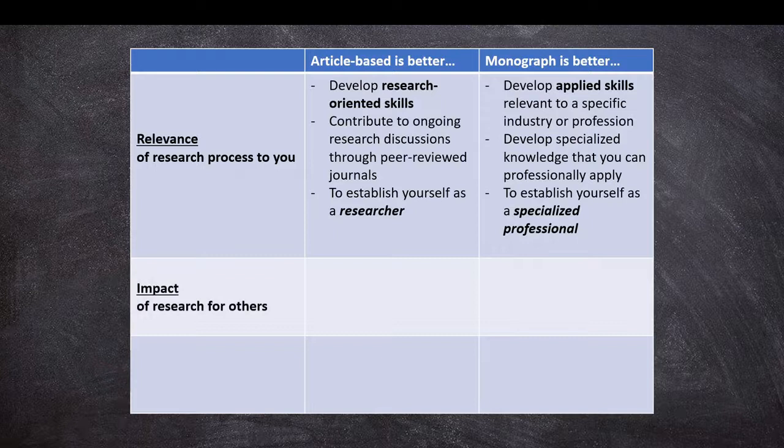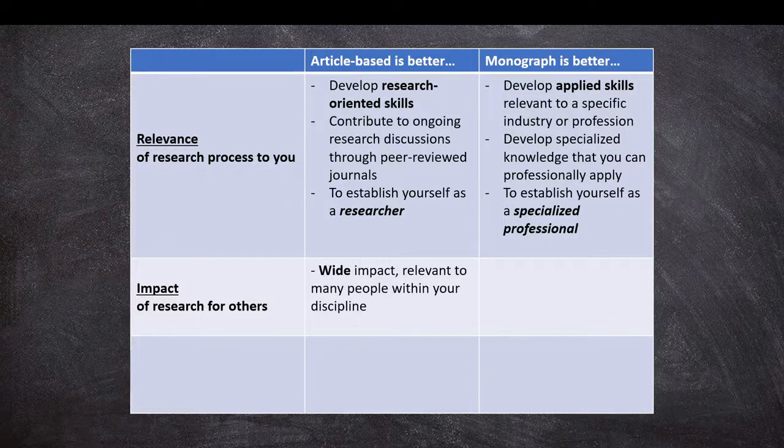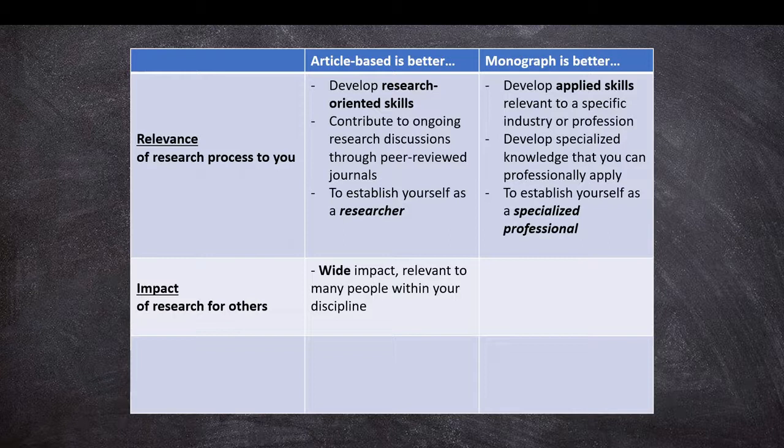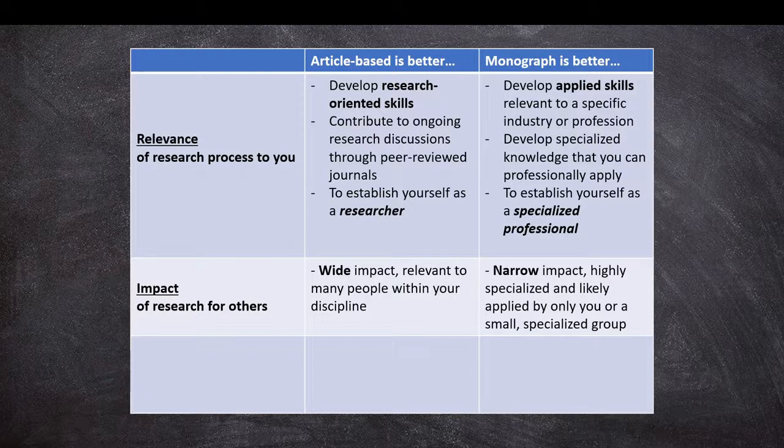We should also consider the impact that your research might have for others. If you have a wide impact that is relevant to many people within your discipline, articles are a much better approach because you can get quick information out and in shorter formats that's easier for people to read and access. Whereas if you have a very narrow impact, or you work within a highly specialized and small group that is likely to end up applying your research, a monograph could be better.